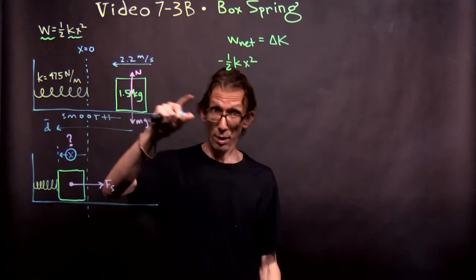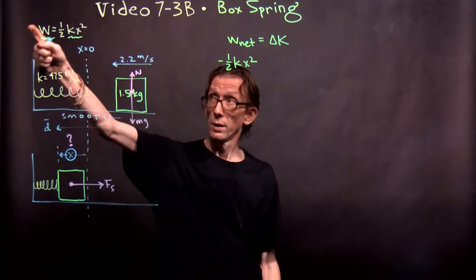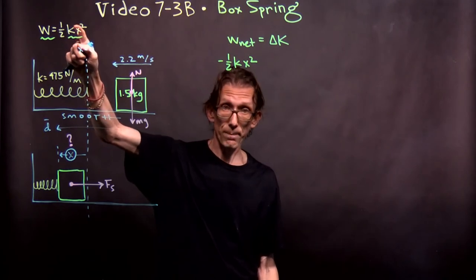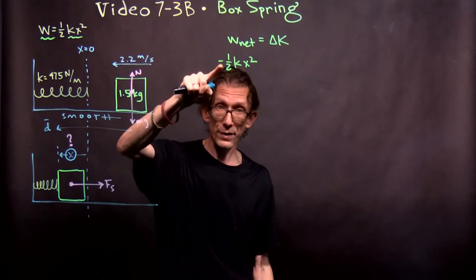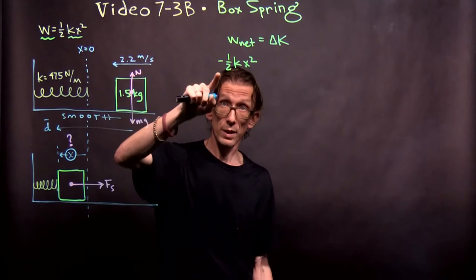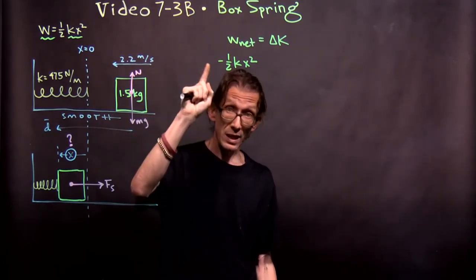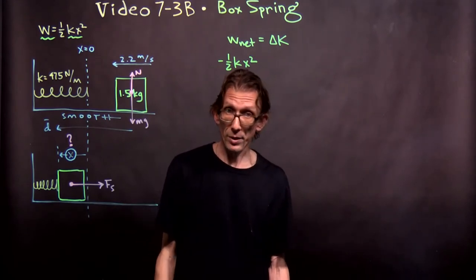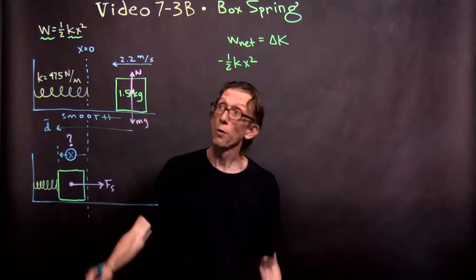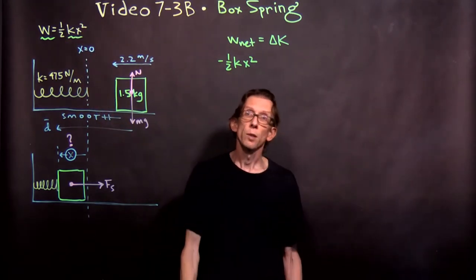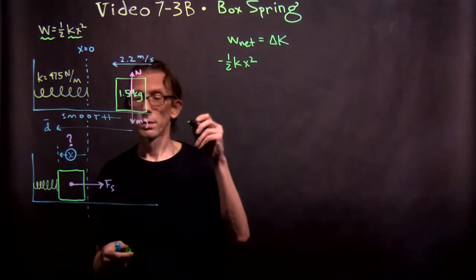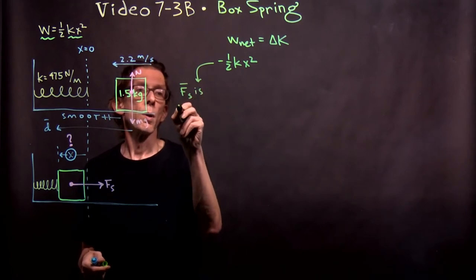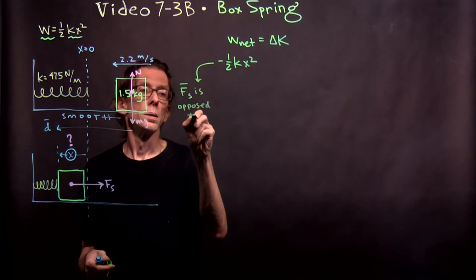Now, I said earlier that this quantity — one-half kx squared — is always positive, and that's right. k is always positive and x squared is always positive, so one-half kx squared is always positive. But spring forces can do negative work, in which case you put a negative sign out in front of it. When the work done by the spring on the block is negative, you have to put that negative sign there. Spring forces can do negative work, even though the quantity one-half kx squared itself is always positive.